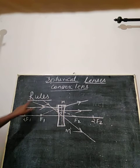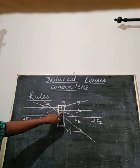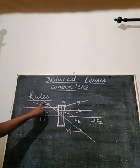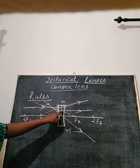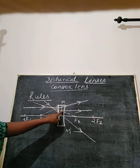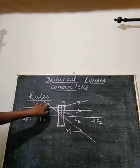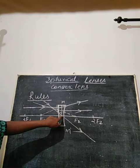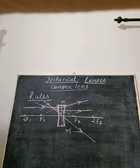Second rule: if a ray is coming towards point f2 — appearing to meet it but not actually meeting — it becomes parallel to the principal axis after refraction. Third rule: if a ray is passing exactly through the center of the concave lens, it moves along the same path without any deviation.